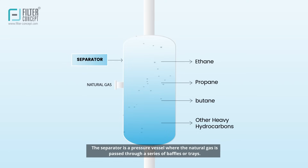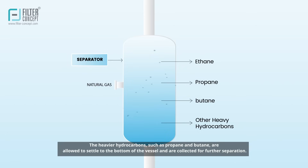The separator is a pressure vessel where the natural gas is passed through a series of baffles or trays. The heavier hydrocarbons, such as propane and butane, are allowed to settle to the bottom of the vessel and are collected for further separation.